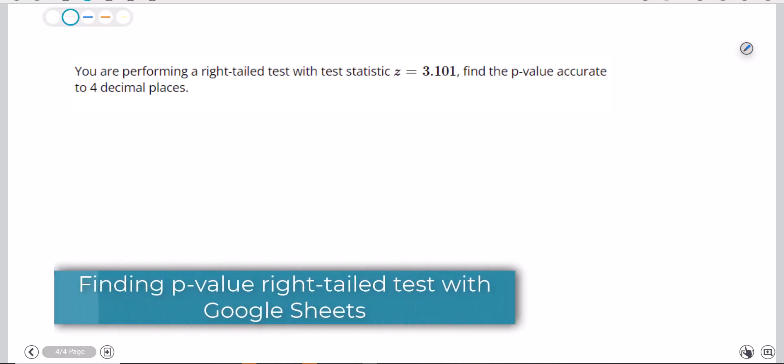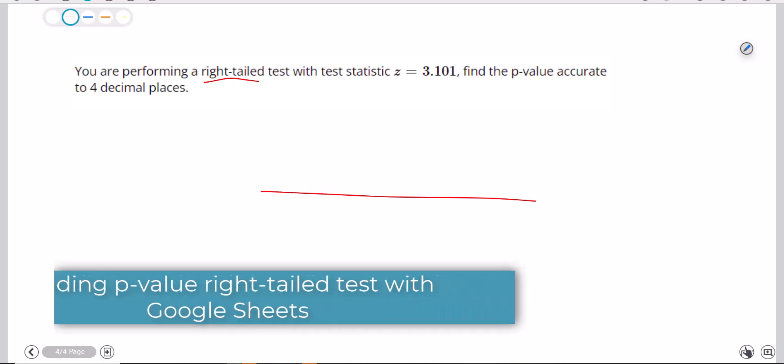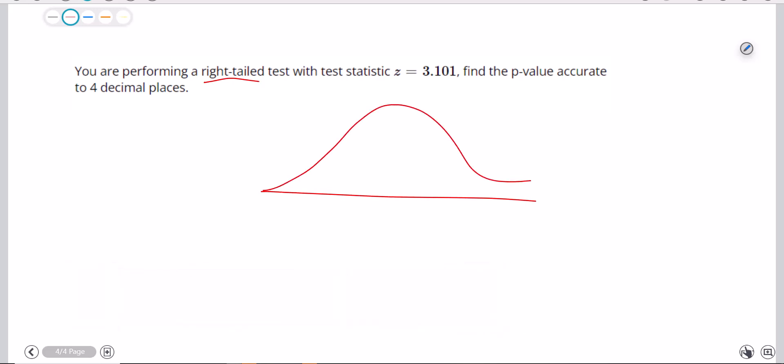Okay, if you watched the last video we did a left tail test. This is a right tail test, which means remember our standardized mean of zero, so this is going to be area to the right that we want.